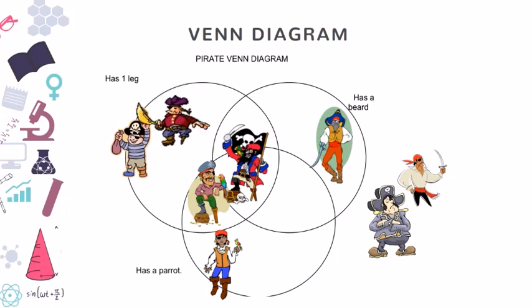Let's see this guy. This guy doesn't have a beard, doesn't have a parrot, and he has two legs or doesn't have legs. Then he belongs outside. Now, do you understand? This is how you categorize the pirates if there are three categories.